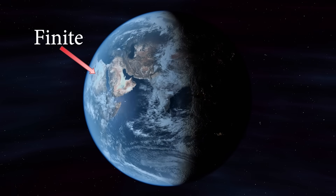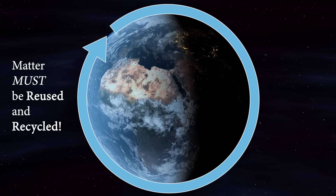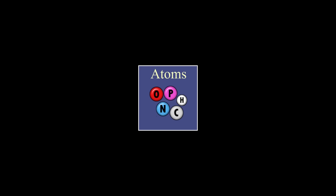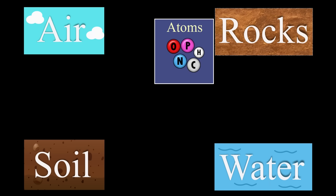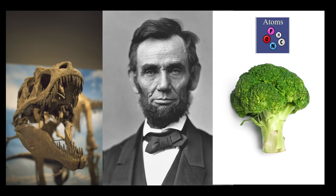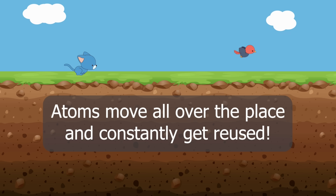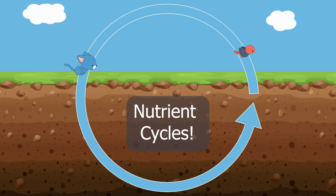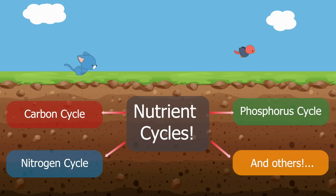Because the earth is finite, matter has to be reused and recycled over and over again. So the atoms that are in you were once in the air, in soil, in water, and in rocks. These atoms have also been used by countless other living things, from dinosaurs to broccoli plants to Abraham Lincoln. And after they leave you, they will become part of other living things or of the environment. This recycling of matter is known as a nutrient cycle, and there are several different nutrient cycles for different elements.